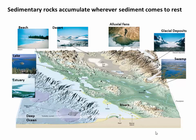Sedimentary rocks are deposited on the surface, and that's broad — it means a lot of different places. Anywhere there's water: a lake, a beach, the deep ocean. But also places outside of water, like sand dunes, alluvial fans, glacial deposits, and swamps. Any place you can lay down sediment and bury it with additional sediment is a place you could potentially make a sedimentary rock. Because of that, they record the conditions of Earth's surface and oceans over time — an incredible record of Earth's history.